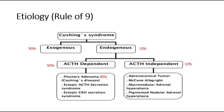For the etiology of Cushing's syndrome, there is the rule of nine. The causes can be exogenous or endogenous. 90% of cases are due to exogenous medications, whereas 10% is due to endogenous causes. The endogenous causes can be further divided into ACTH-dependent and ACTH-independent, where 90% will be ACTH-dependent. Pituitary adenoma, also known as Cushing's disease, contributes to 90% of the ACTH-dependent cases. So the most common cause is exogenous medications, and the second most common is Cushing's disease.